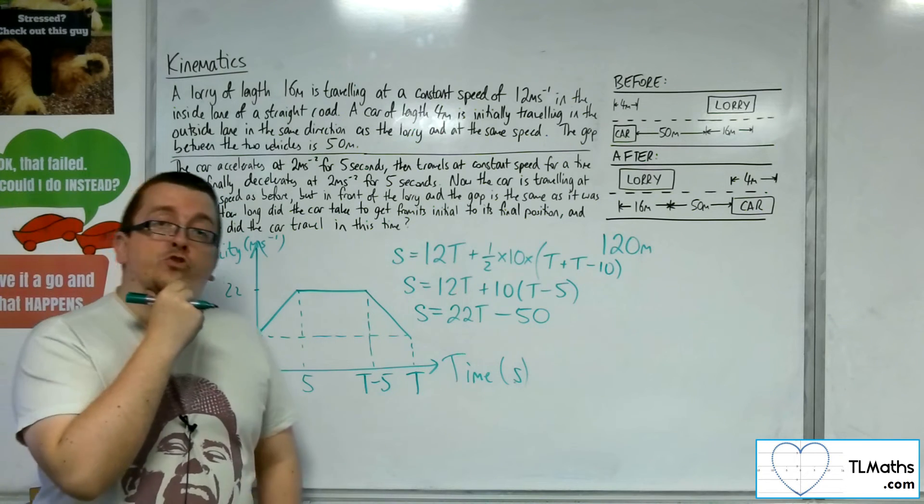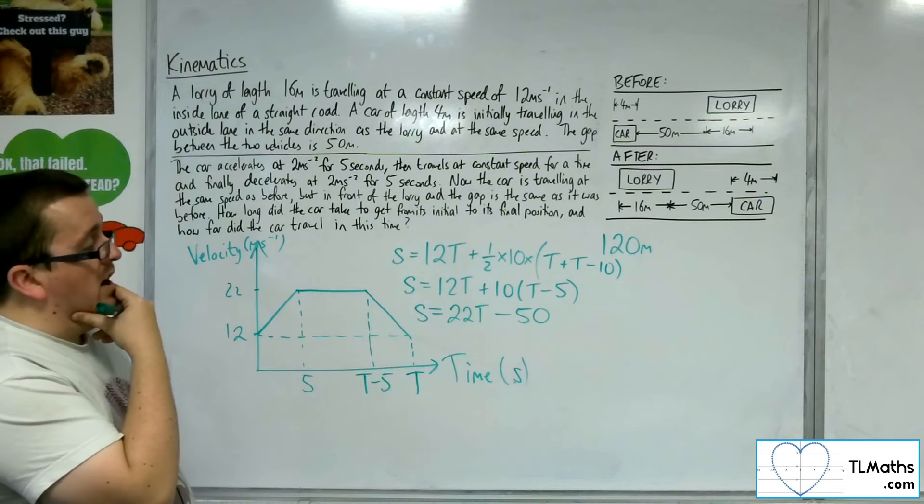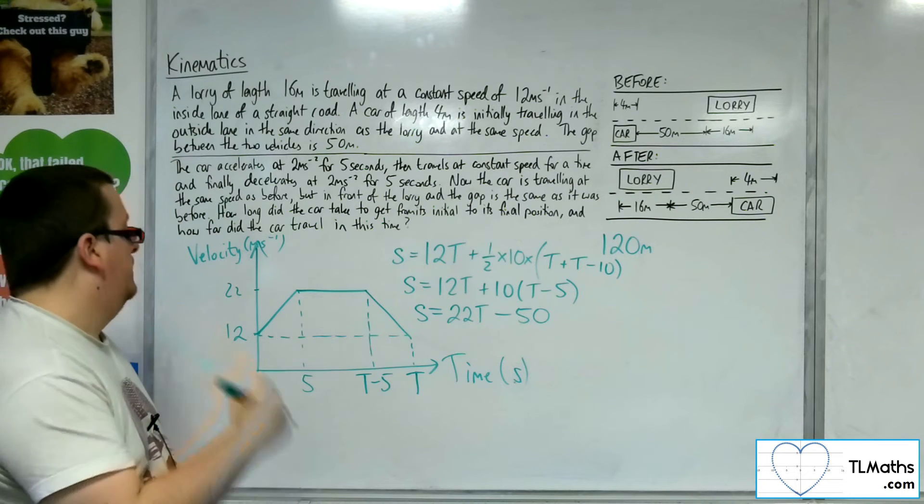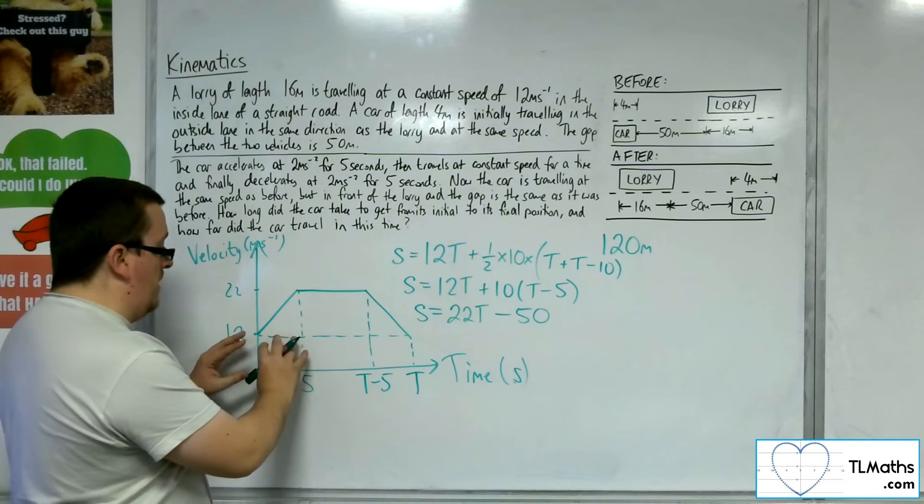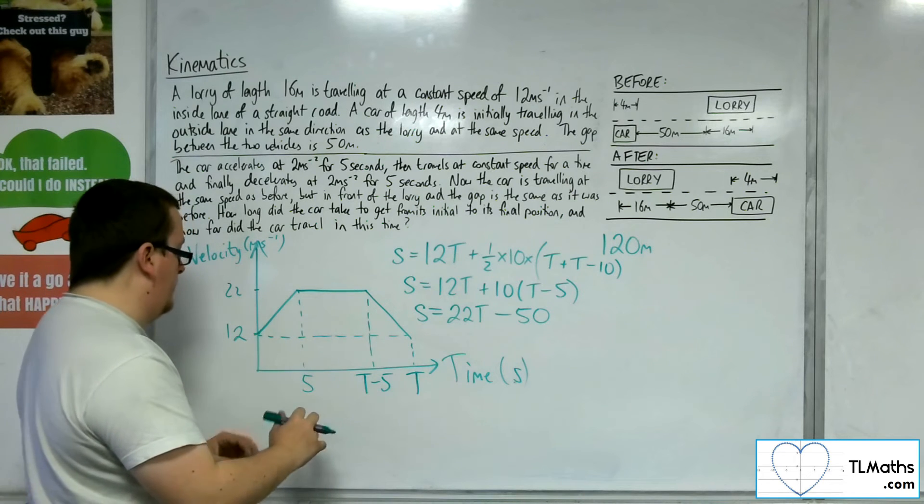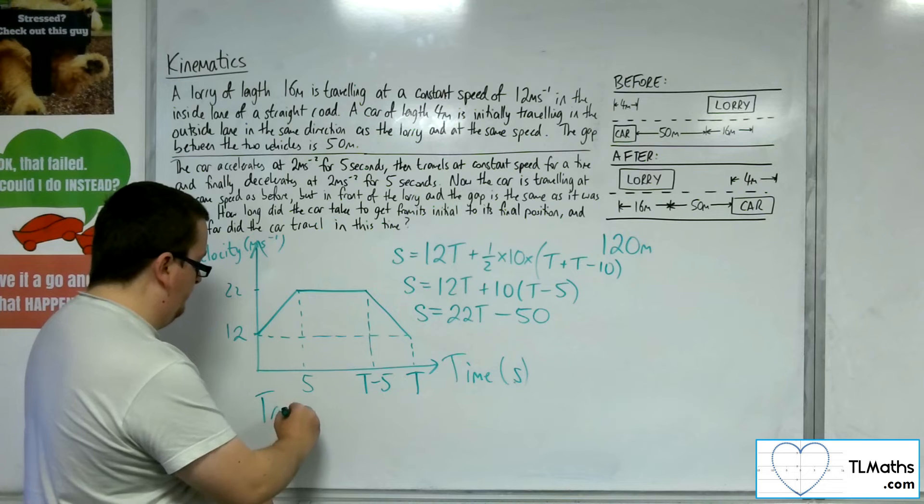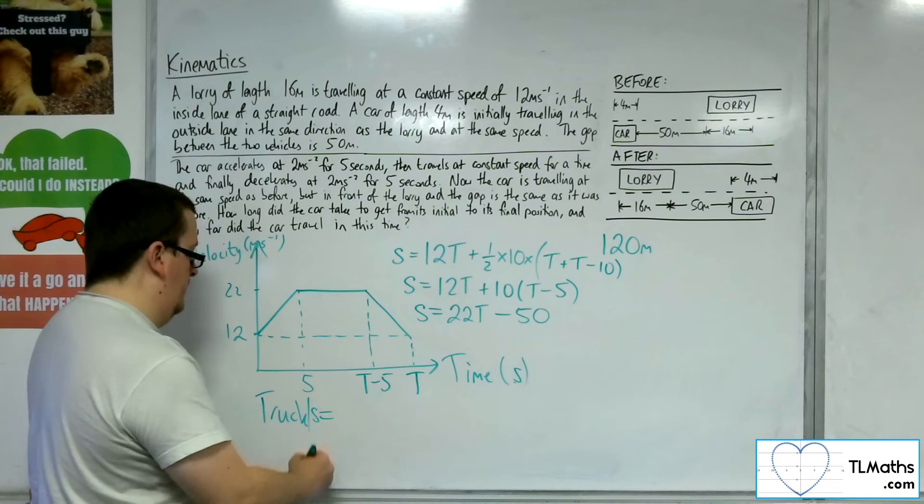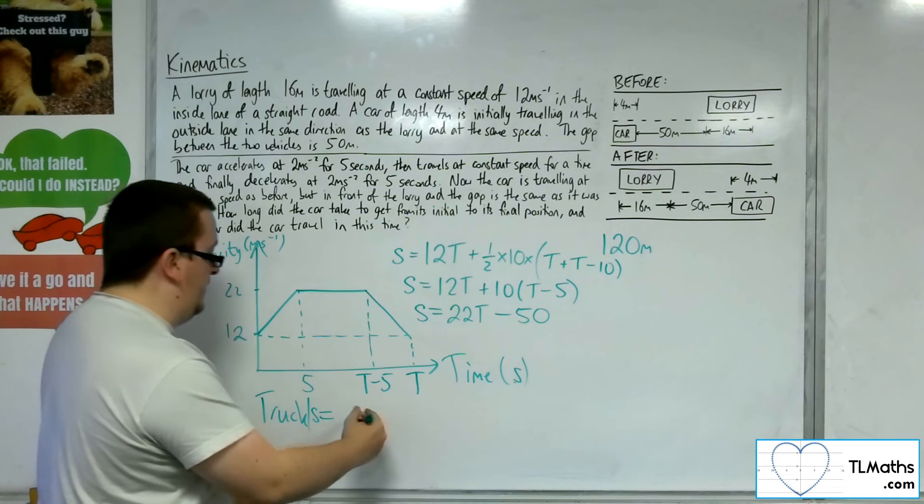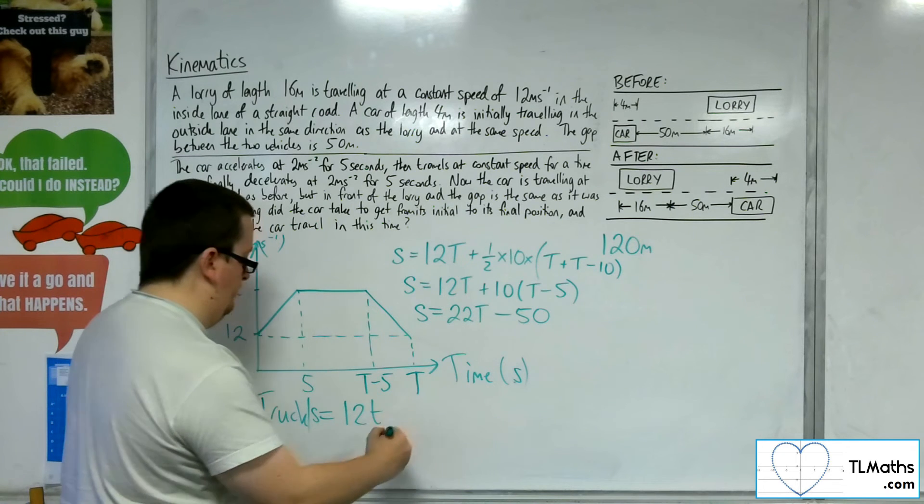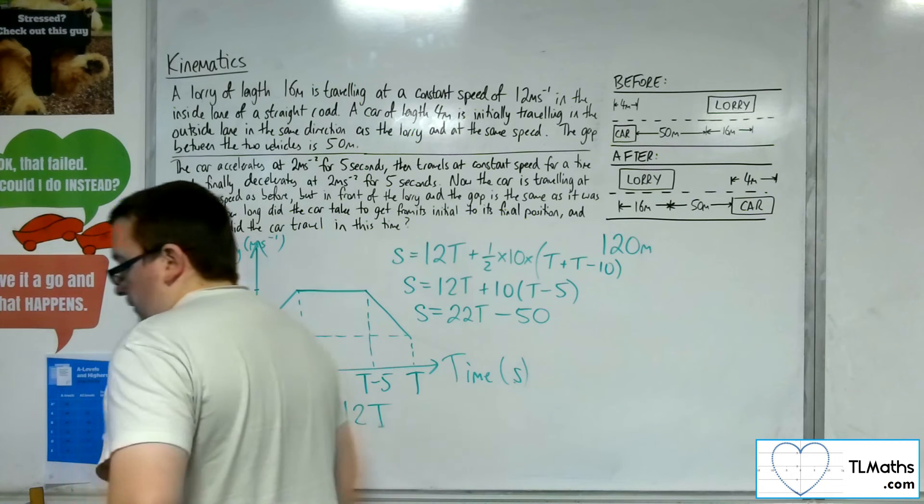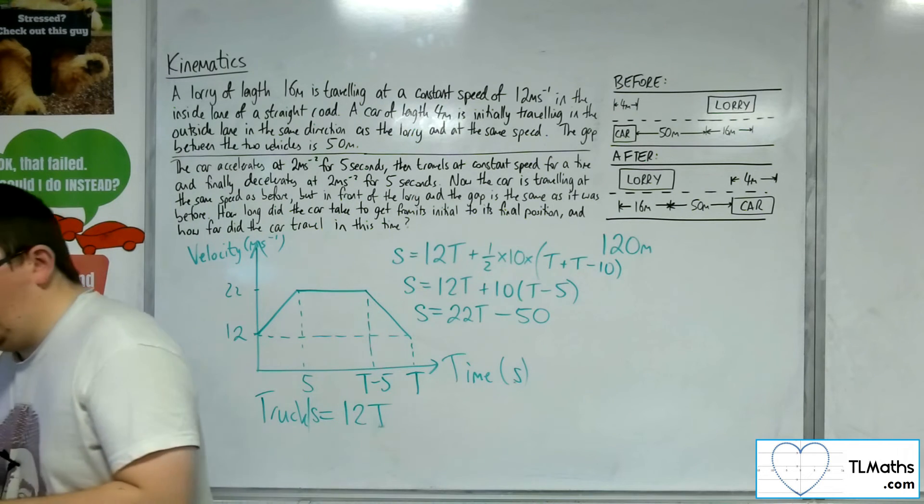Now how about the truck? That's how far the car's gone. For the truck, then the truck has just travelled that block there. So for the truck, we're looking at an S of 12 times T.